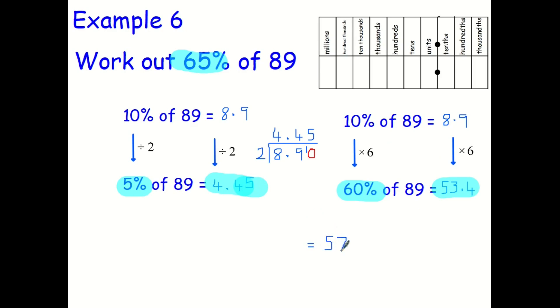It's always worth checking as well that your number looks reasonable. So look back at the question. The question says 65% of 89. Well, yeah, 57.85 looks reasonable. It's less than 89 because, of course, you need a number less than 89 because otherwise you've not done the right calculation. And, yeah, it's more than half. So, yeah, we're in the right ballpark. 57.85.